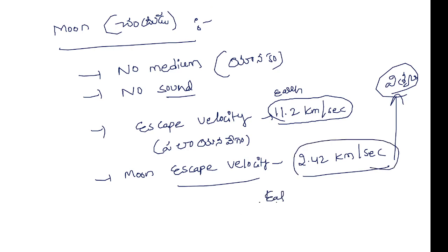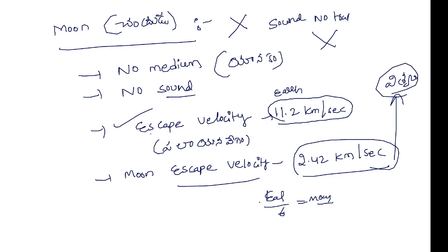Gravitation is too thick — if we go to the moon, gravity on the moon is 1/6th of Earth's. So if you are 60 kg on Earth, you become 10 kg on the moon. If you go where there is no gravitational force, the escape velocity changes. The moon's escape velocity is 2.42 km per second, while Earth's is 11.2 km per second. There is no atmosphere on the moon. Because there is no atmosphere, there is no medium, and sound cannot travel on the moon.